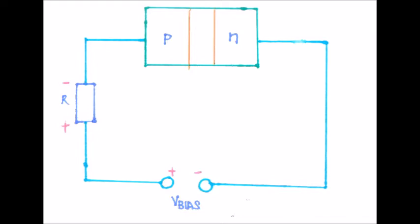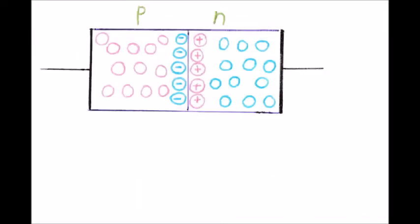What happens to the depletion region during forward bias? More electrons flow into the depletion region during forward bias, hence the positive ions are reduced. More holes also flow into the depletion region from the other side of the P-N junction, hence the negative ions are reduced. The depletion region is narrowed because both the positive and negative ions are reduced.